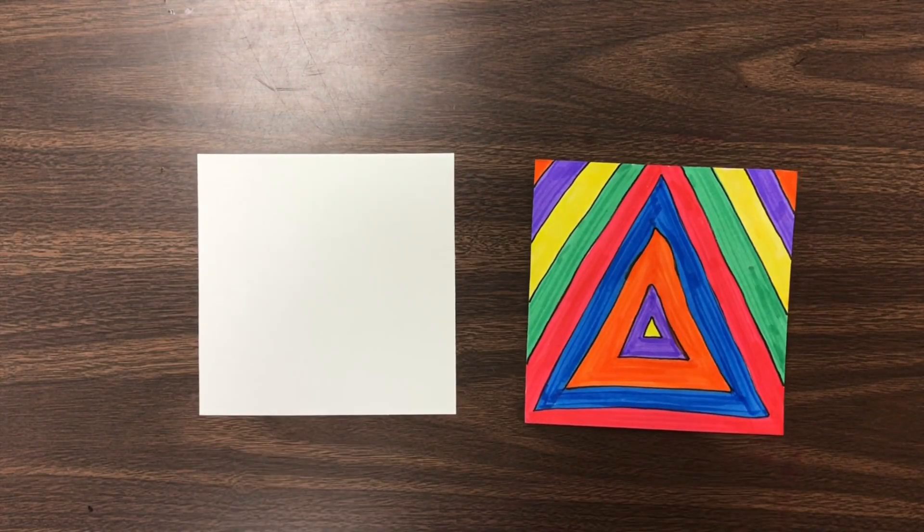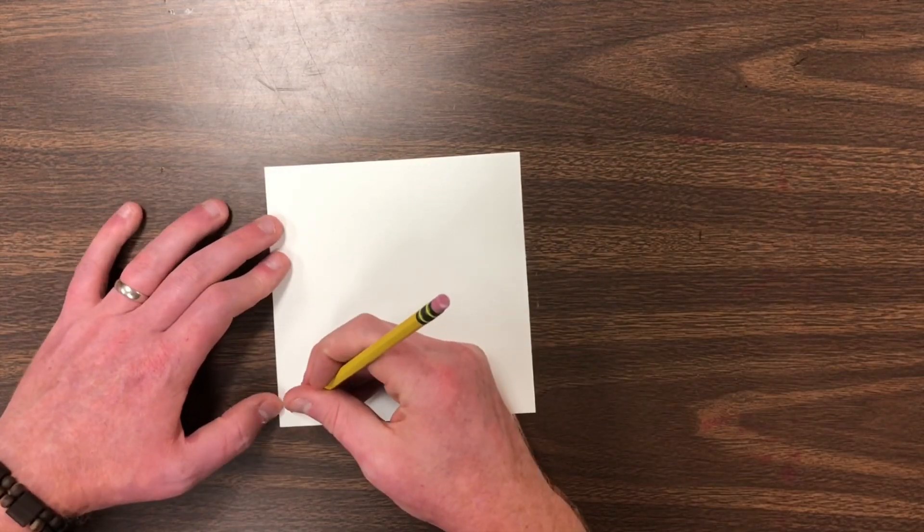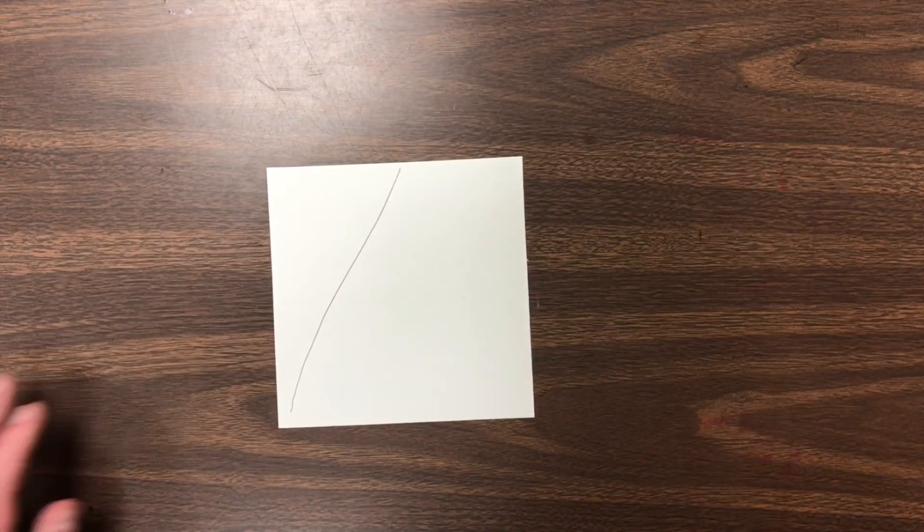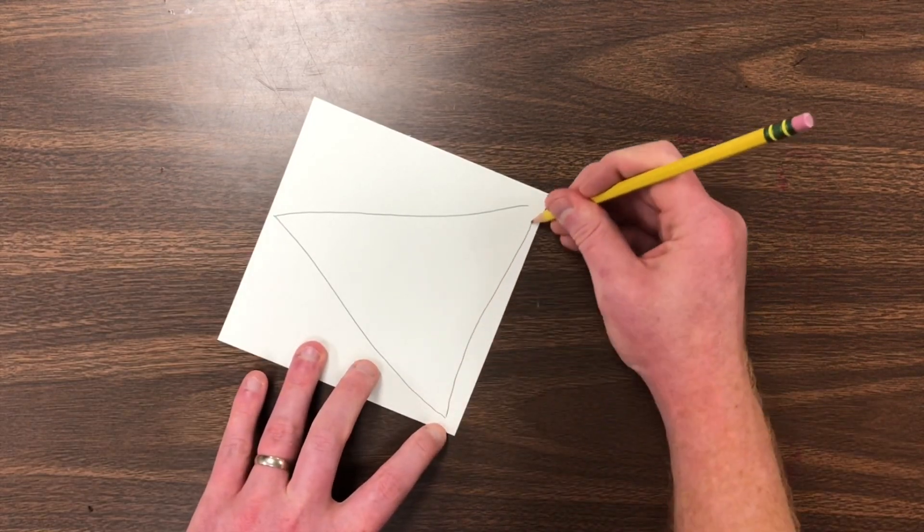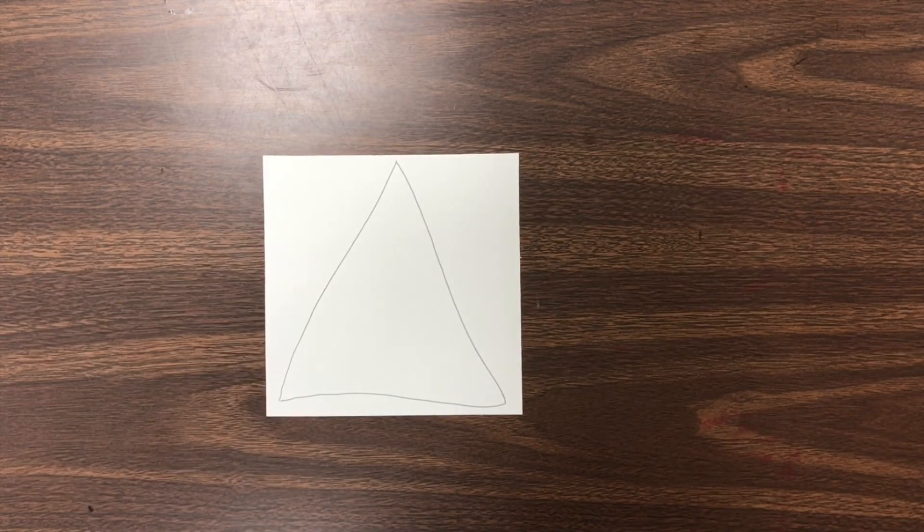What about a triangle? Let's draw a triangle shape that has three sides. Large. Try to fill up our whole paper, just like before.